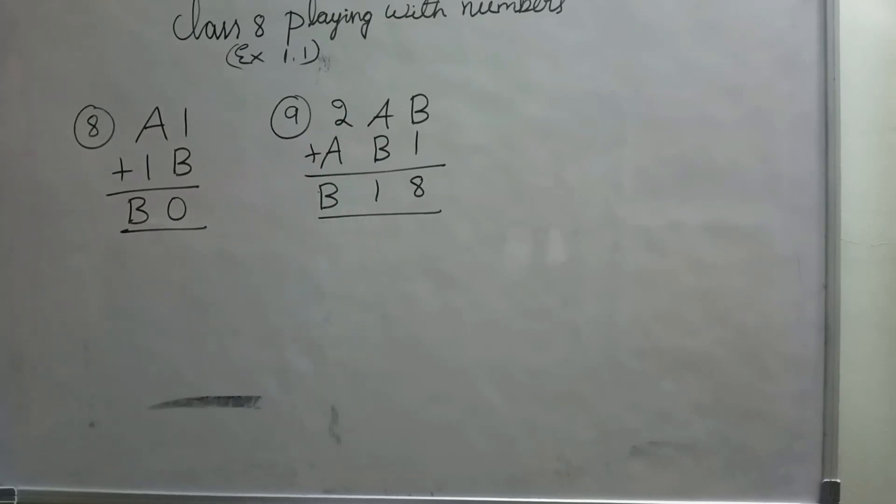I am solving exercise 1.1 playing with numbers class 8, 8th problem. A1 plus 1B equals B0. This means if I add A1 to 1B, I will get B0 as answer. Let's check here.